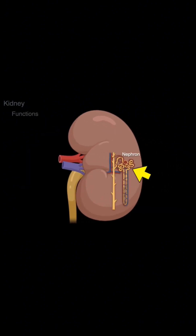Now, let's take a closer look at the internal anatomy of the kidney. Inside the kidney, there are two main regions: the outer renal cortex and the inner renal medulla.